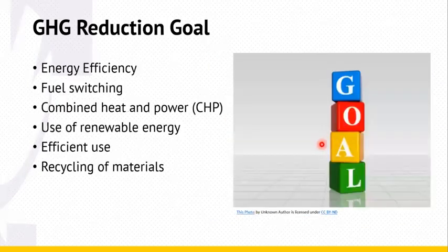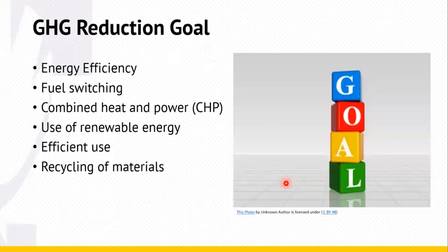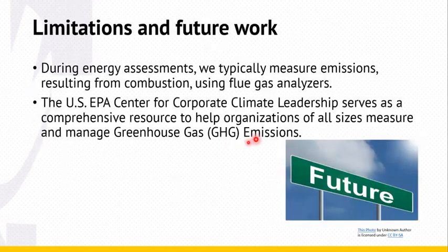There are many ways to reduce greenhouse gas emissions from the industrial sector, including energy efficiency, fuel switching, combined heat and power (CHP), and the use of renewable energy, among others. Those doing energy assessments will typically measure emissions results from combustion using a gas analyzer. However, those emissions are only a fraction of the total emissions resulting from a company's value chain.